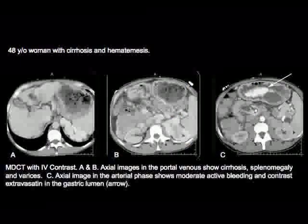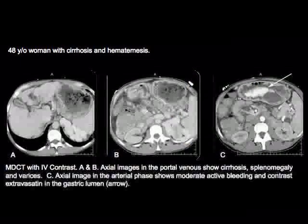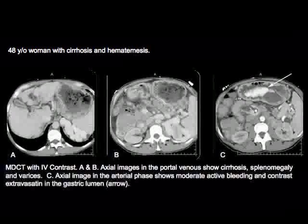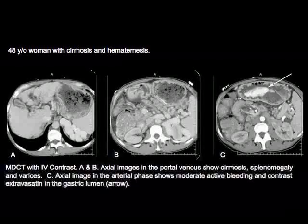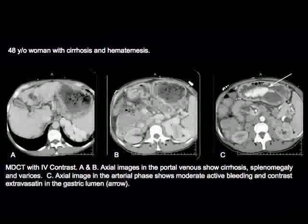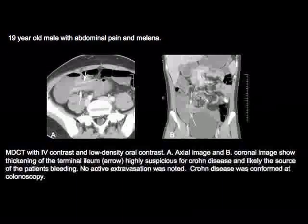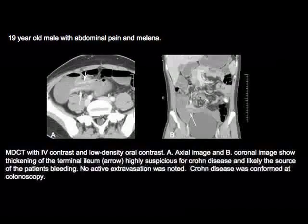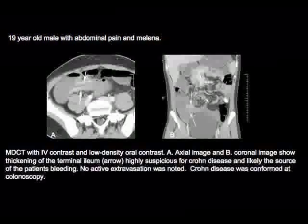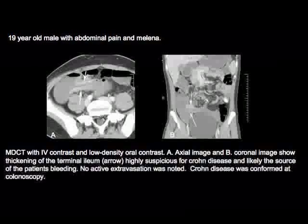This case shows a patient with cirrhosis and hematemesis — look at the stomach: active bleeding with contrast extravasation in the gastric lumen, almost looking like oral contrast, but none was given. Another example: a 19-year-old with abdominal pain and melena shows a thickened terminal ileum with enhancement compatible with Crohn's disease. No contrast extravasation is seen, but Crohn's disease is assumed to be the cause of the bleeding.